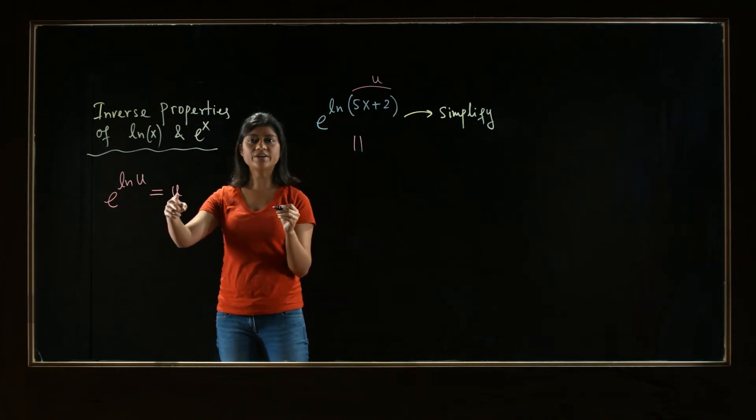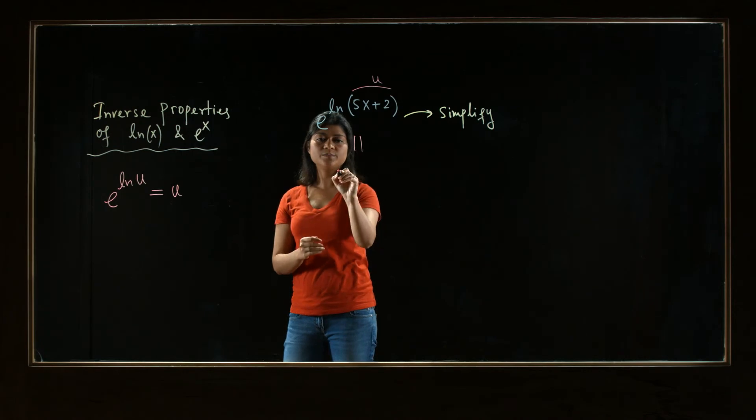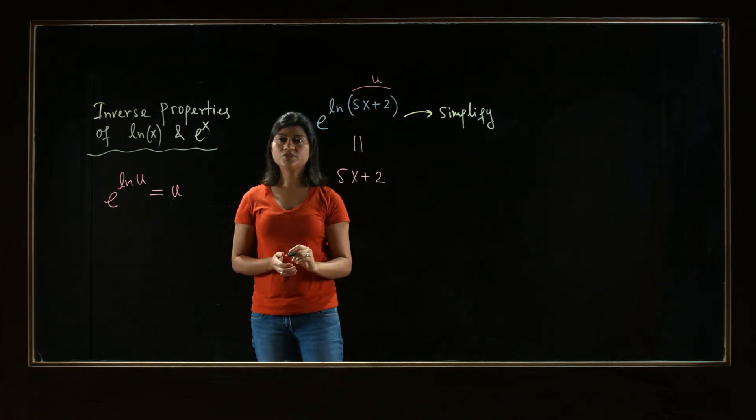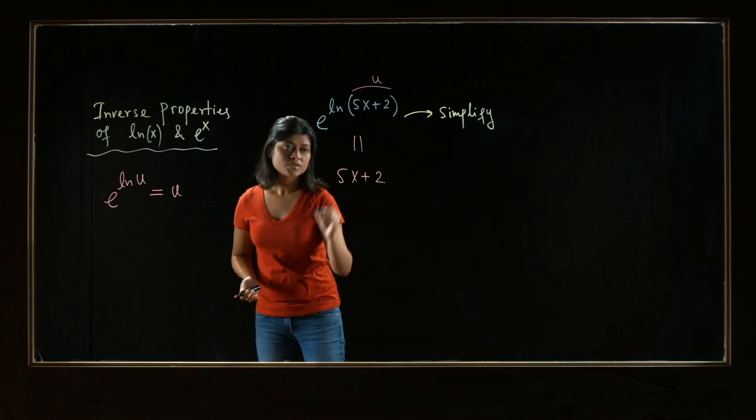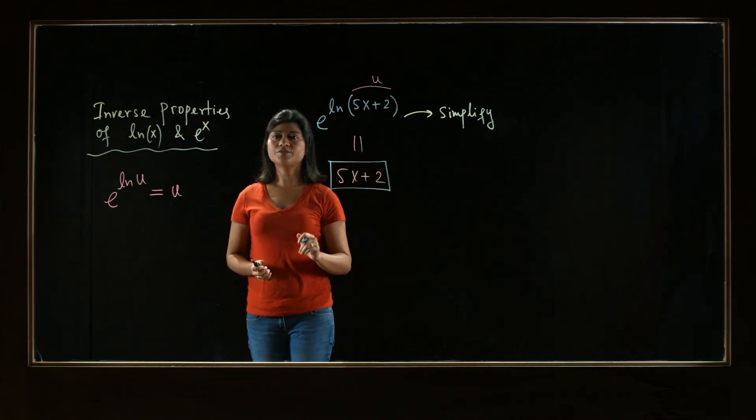Well, we can just apply this property. E to the power ln of u is nothing but the expression u, which is 5x plus 2. So this is the simplified form of the given expression.